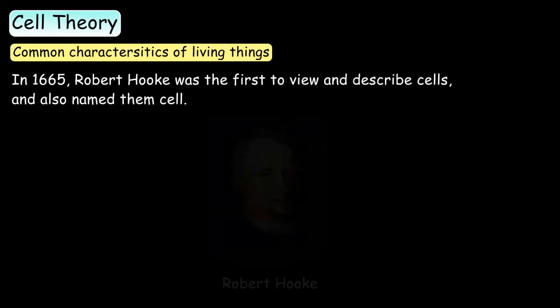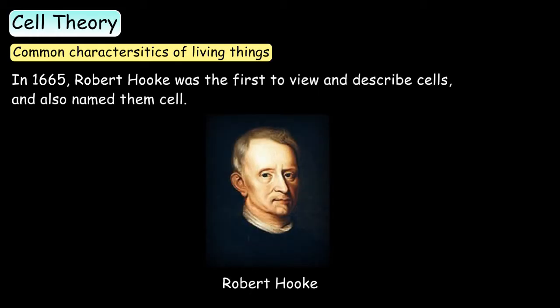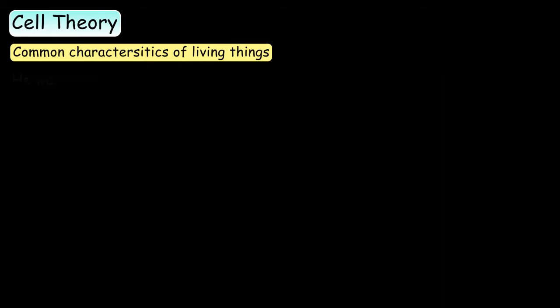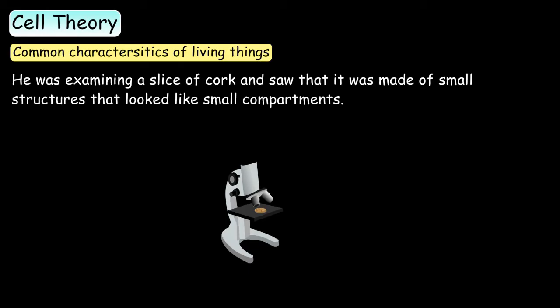In 1665, Robert Hooke was the first to view and describe cells. He also named them cell. He was examining a slice of cork and saw that it was made up of small structures that looked like small compartments and he named them cells.